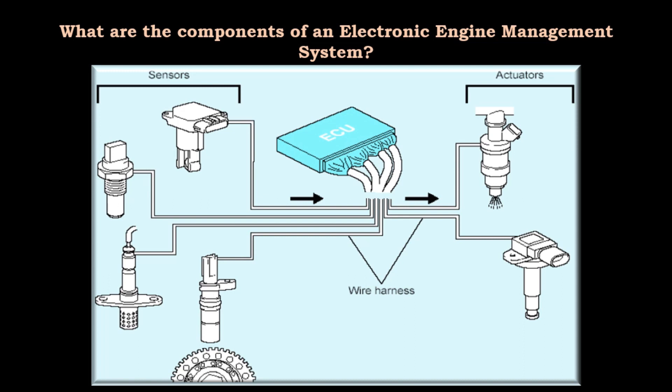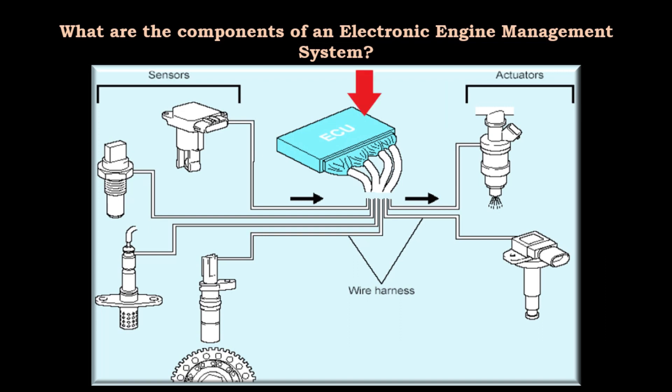An electronic engine management system is composed of three basic components: the ECU, sensors, and actuators. The ECU, or electronic control unit, is the brain of the system — it commands what actuators should do based on input from the sensors. ECU is a Society of Automotive Engineers terminology for computers that control the system. An ECU that controls engine functions is called the engine control module or ECM.